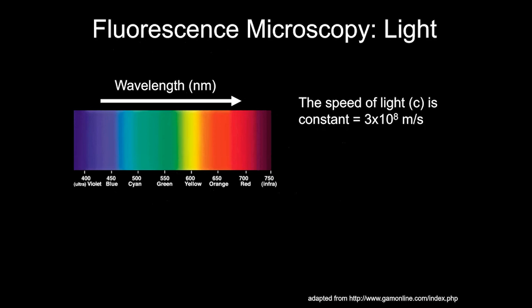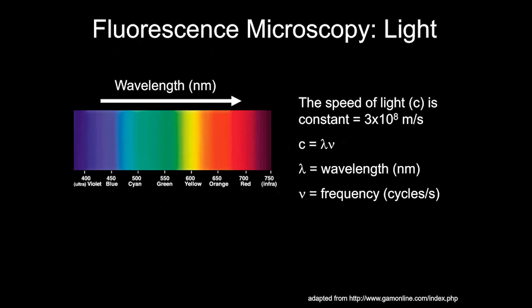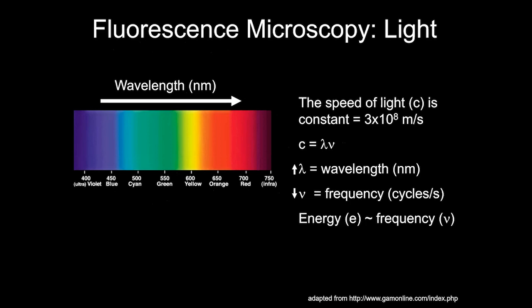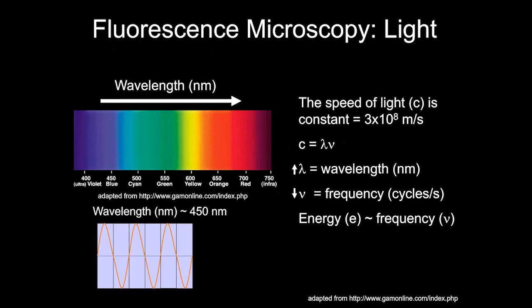The speed of light is constant, dependent on the wavelength and frequency of the light produced. Energy is roughly equivalent to frequency, so something like 405 nanometers in the UV range has high energy, high frequency, and short wavelengths. Longer wavelength light, such as 700 nanometers, is lower energy, less photodamaging, and less phototoxic.